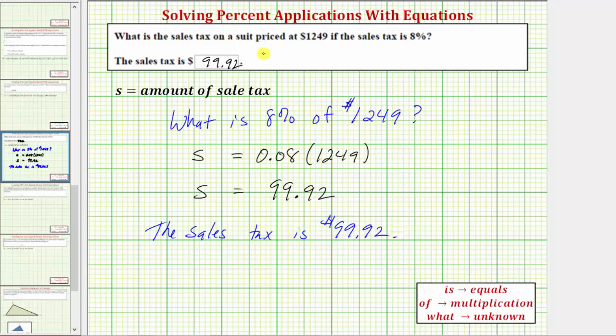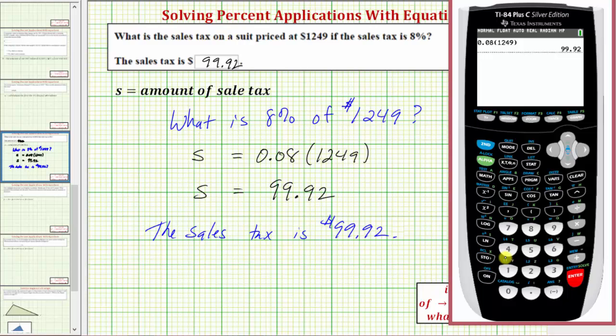we'd have to add $99.92 to the price of the suit, which is $1,249. So just to show that, the price at the register would be $1,249 plus $99.92.